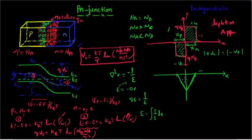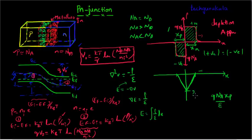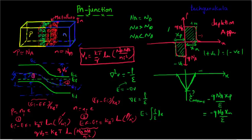The peak electric field E_max occurs at the metallurgical junction (X equals 0). Integrating from the P side, E_max equals minus Q·NA·XP over epsilon. This can also be written as minus Q·ND·XN over epsilon, because the area under the positive charge equals the area under the negative charge — that is, Q·NA·XP equals Q·ND·XN by charge neutrality. This is the electric field profile.